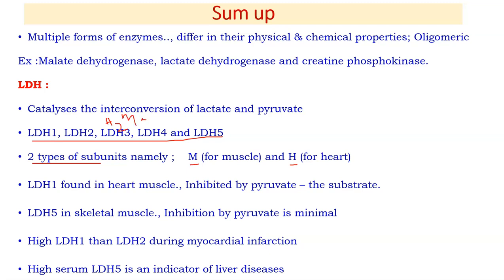LDH1 in heart muscle operates in an aerobic environment and is inhibited by pyruvate, preventing conversion of pyruvate to lactic acid. Instead, pyruvate is converted to acetyl-CoA, which enters the citric acid cycle for aerobic respiration. LDH5 in skeletal muscle does the opposite — it is not inhibited by pyruvate even when present in large quantities, so pyruvate is converted into lactic acid.